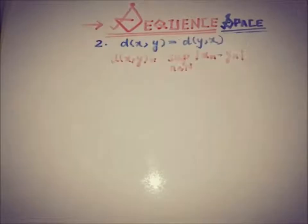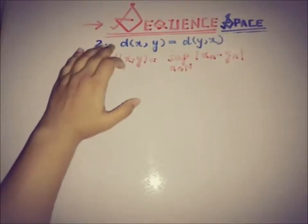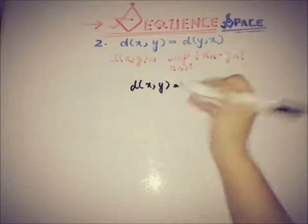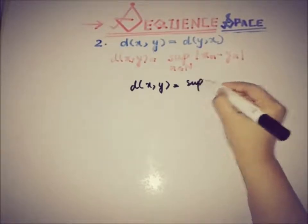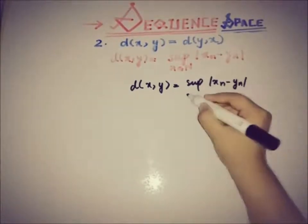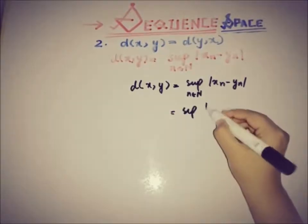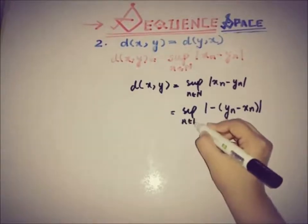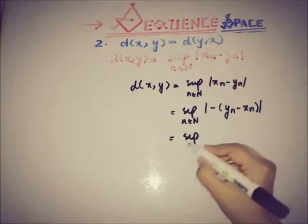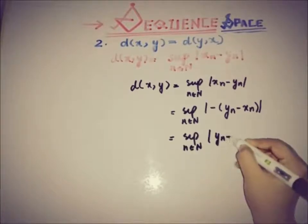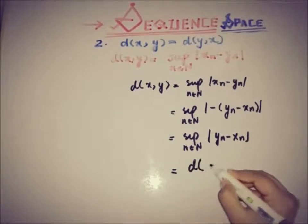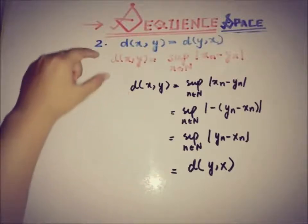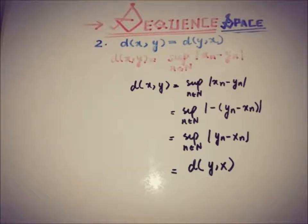Now moving toward the second condition, which is about symmetry — that d(x,y) must equal d(y,x). We know that d(x,y) equals the supremum of |x_n minus y_n| for n in the natural numbers. We take out the negative factor, giving us the absolute value of y_n minus x_n, which is the definition of d(y,x). So symmetry has been proved, and this function has symmetry.